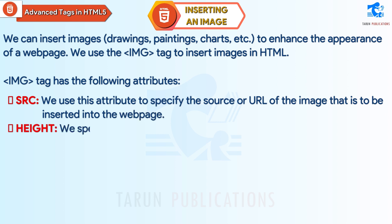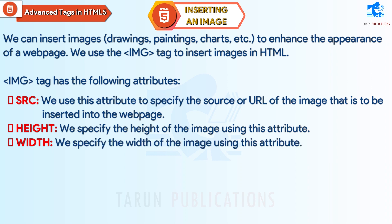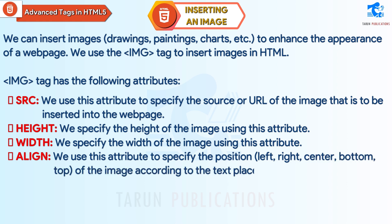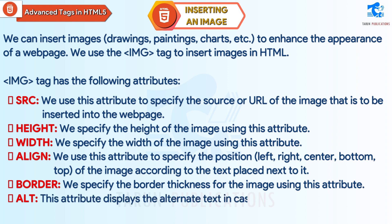Height: We specify the height of the image using this attribute. Width: We specify the width of the image using this attribute. Align: We use this attribute to specify the position — left, right, center, bottom, top — of the image according to the text placed next to it. Border: We specify the border thickness for the image using this attribute. Alt: This attribute displays the alternate text in case the image does not appear on the web page.